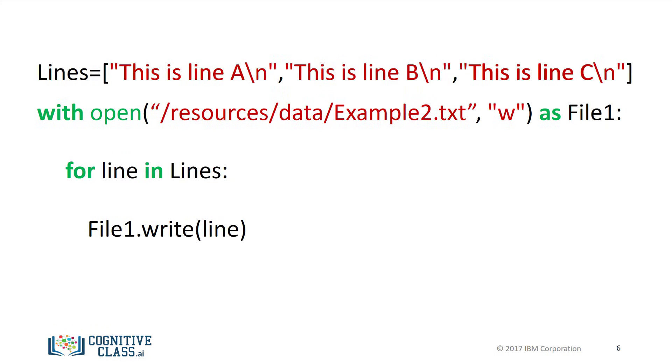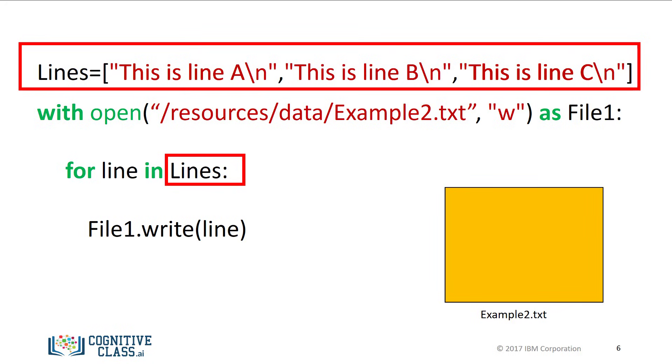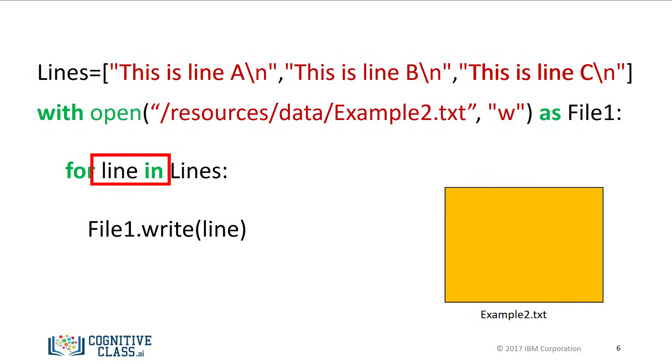We can write each element in a list to a file. As before, we use a with command and the open function to create a file. The list lines has three elements consisting of text. We use a for loop to read each element of the list lines and pass it to the variable line.